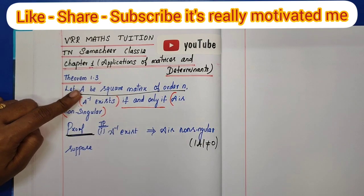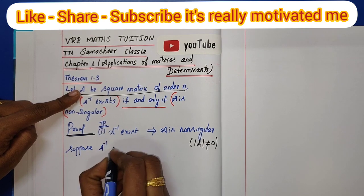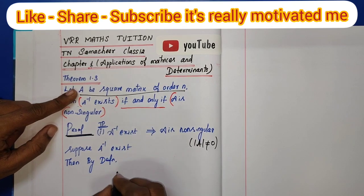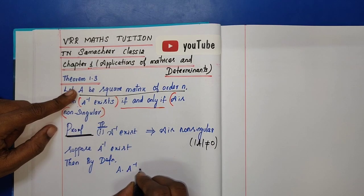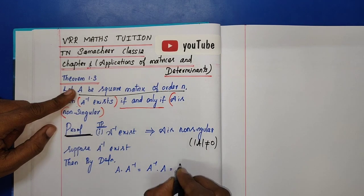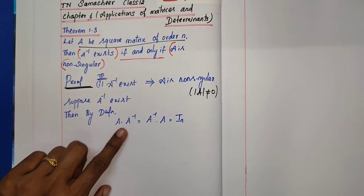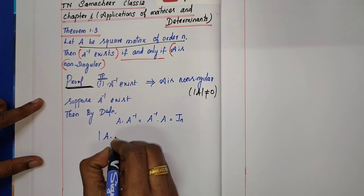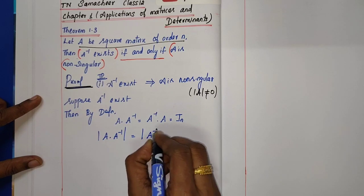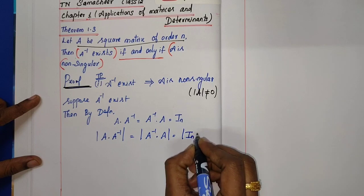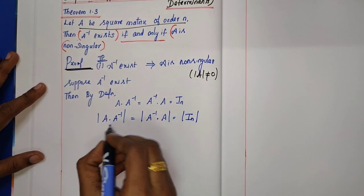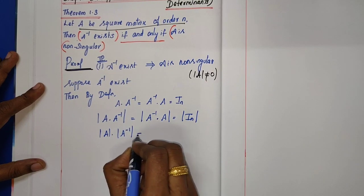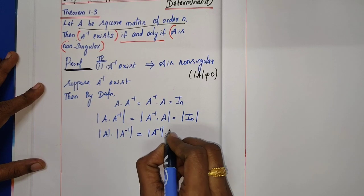Proof: If A inverse exists, then by definition, the given matrix times its inverse equals the inverse times the given matrix, which equals I_n. Taking determinants on both sides: determinant of (A inverse · A) equals determinant of I_n.